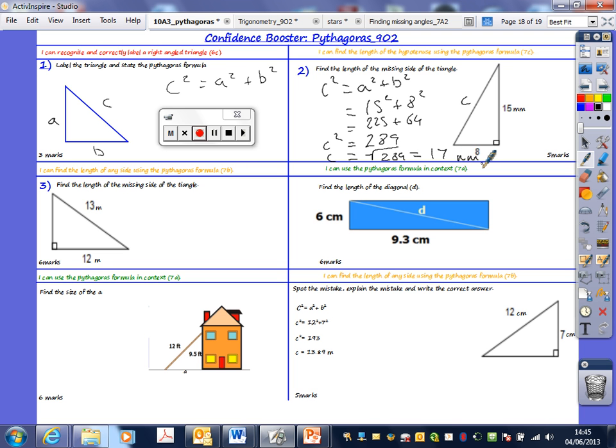289 and it equals 17 millimeters. 17 millimeters. Is that bang on 17 millimeters? Yeah. Okay, good. Make sure you've got the millimeters. You lose a mark if you've not got millimeters on there. How many marks was that then? You lose a mark then because it's millimeters. How many marks? So it's out of 5. So it's out of 5, so it's 4.